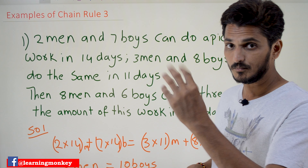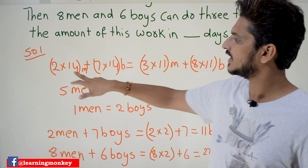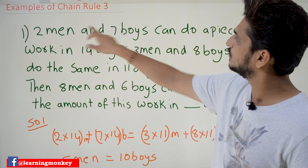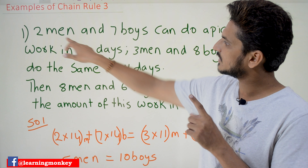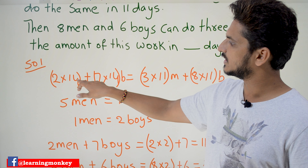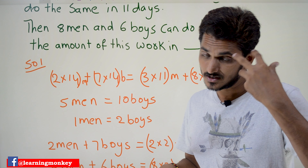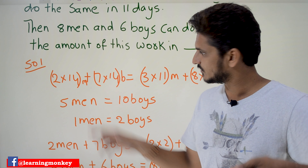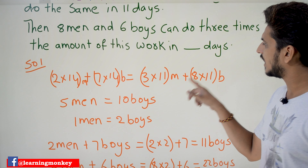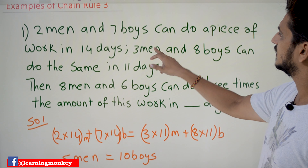In this type of situation — where work, men, and boys are all involved — we need to identify the first key point. From the first statement: two men and seven boys worked for 14 days. So: (2 × 14) + (7 × 14) equals the total work done. This is equal to three men and eight boys working for 11 days: (3 × 11) + (8 × 11).